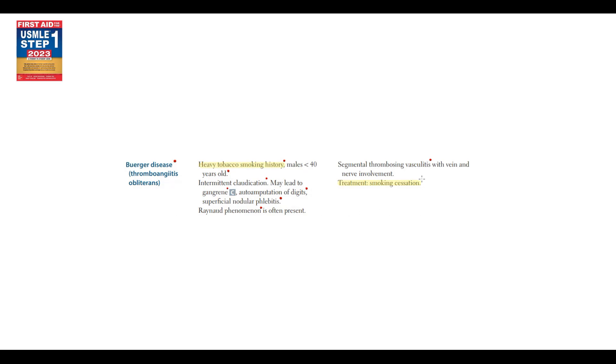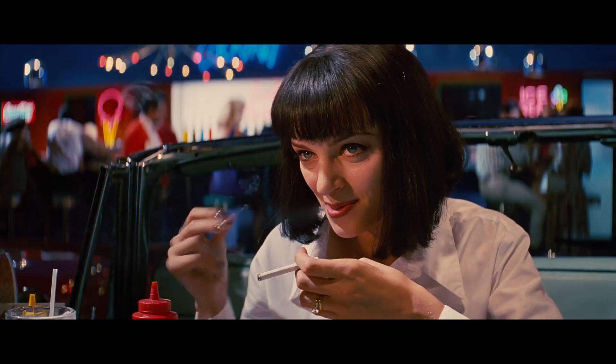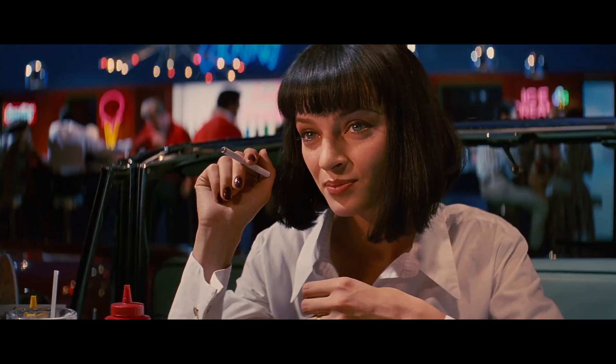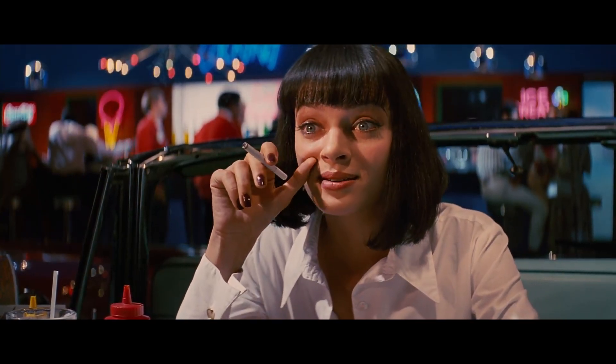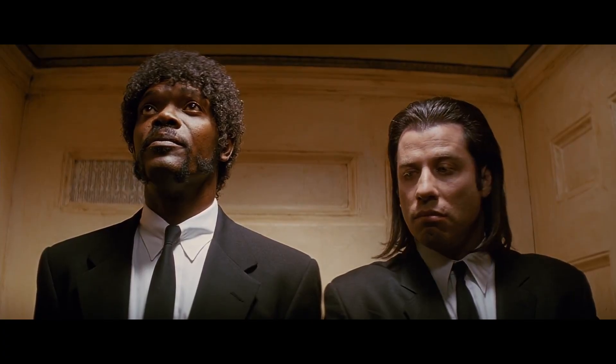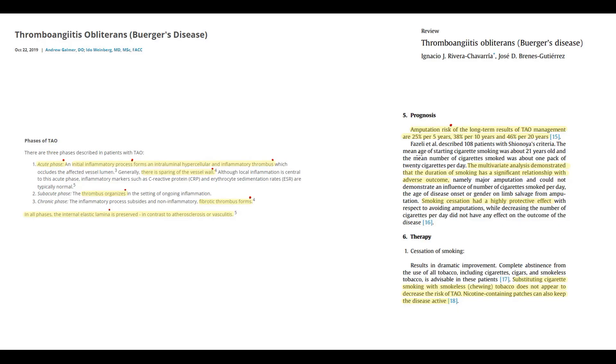And unfortunately, the treatment is smoking cessation. What will happen if the patient continues to smoke? The chances that one of the limbs will be amputated is about 25% per 5 years, and the risk progressively increases with time. In 20 years, there is a 40% chance that one of the limbs will be amputated, which is a pretty strong argument to stop smoking.